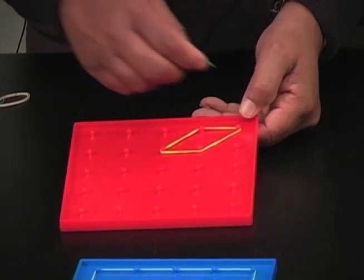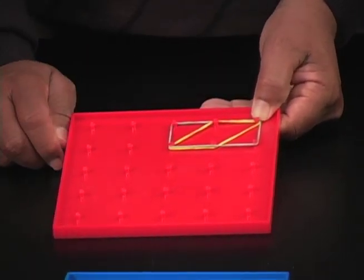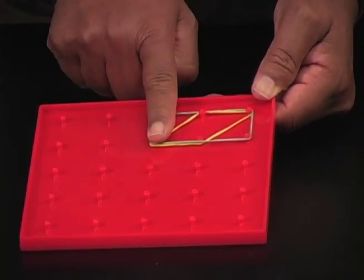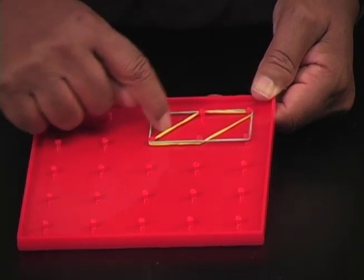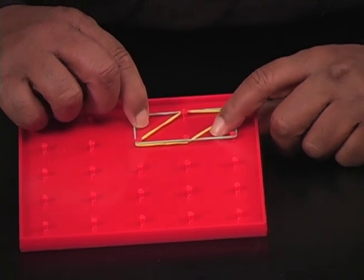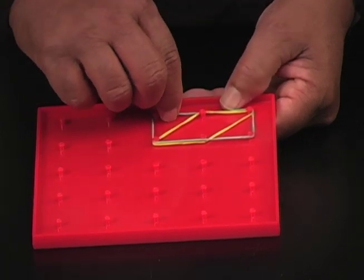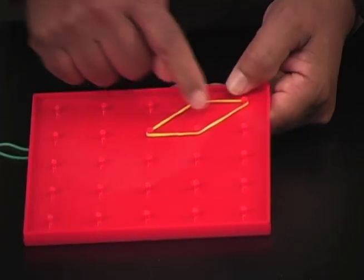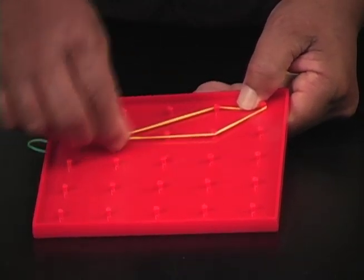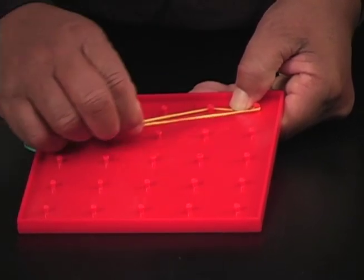One of the wonderful things about the geoboard is how it really deepens a student's conceptual understanding of the mathematics. Because if the area of this rectangle is two square units, then clearly this is a half of one. That's a half. One half plus one half, that's one. One from two leaves me with one. So the area of this parallelogram is one square unit.